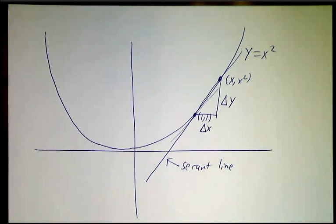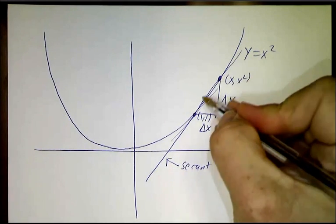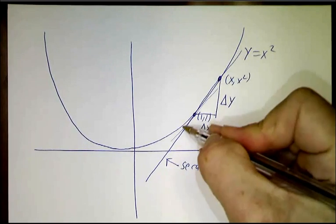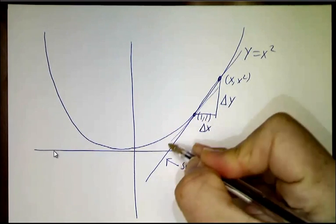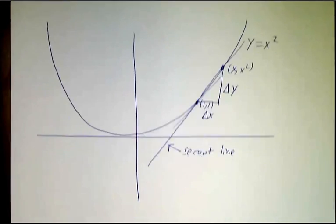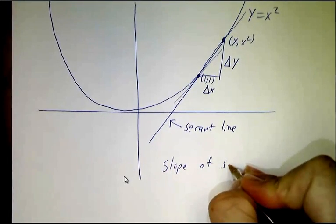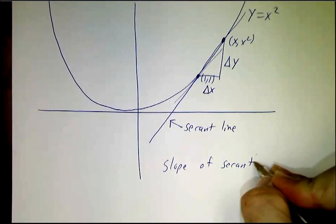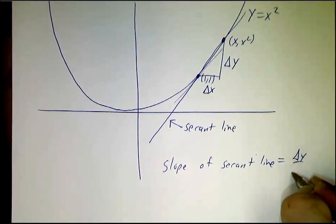As far as I know, that word doesn't have anything to do with the trig function secant, but maybe there's some obscure connection. In any case, this secant line, if you take its slope, that's a pretty good approximation to the slope of the tangent line. So slope of the secant line is delta y over delta x.